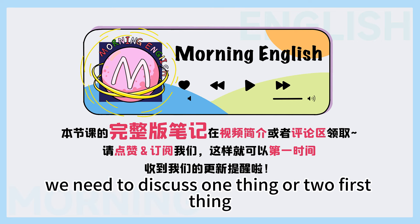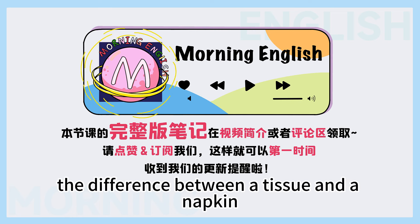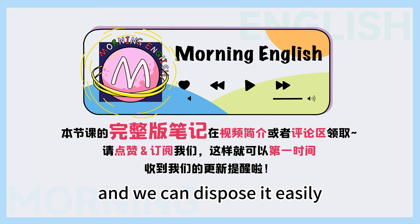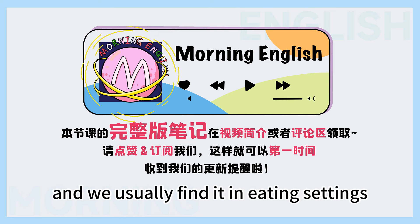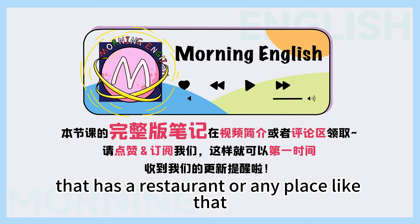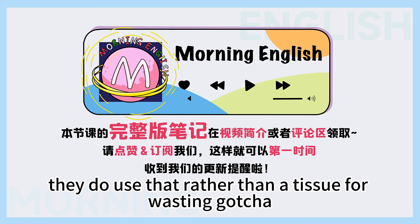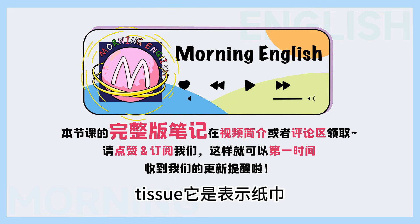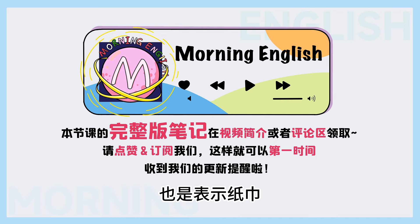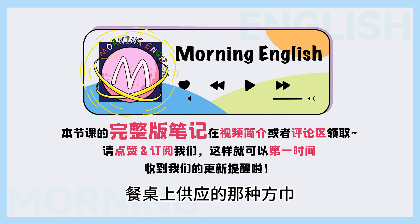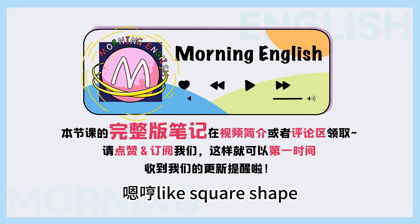Talking about this topic, we need to discuss the difference between a tissue and a napkin. A tissue, like Kleenex, is usually packed in a box and we can dispose of it easily. But the napkin is washed and we usually find it in eating settings, like a restaurant or a hotel. Napkin指的是那种西方餐桌上供应的那种方巾 — like square shape.